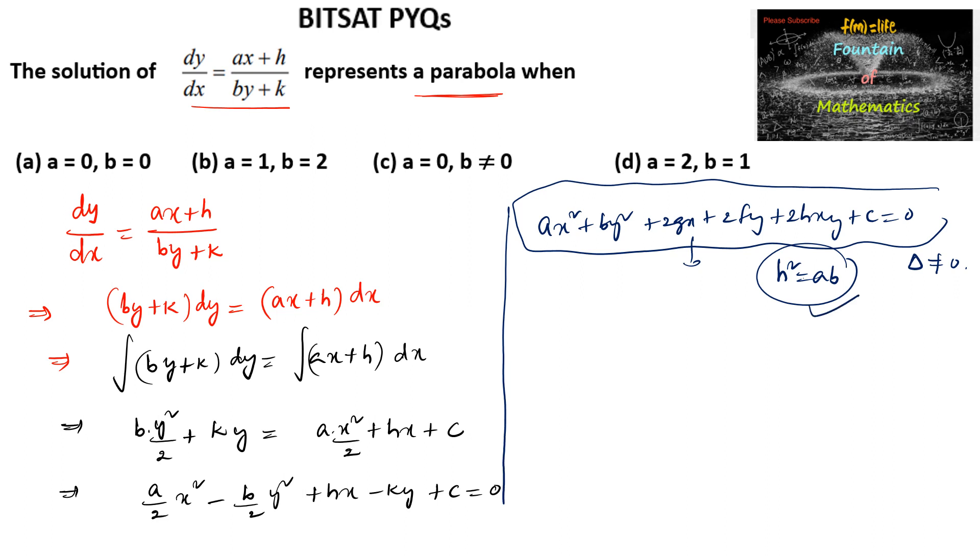Here we can consider h square is equal to ab. So there is no xy term, so h is equal to 0. And here we can add a is equal to a upon 2 and b is equal to minus b upon 2.